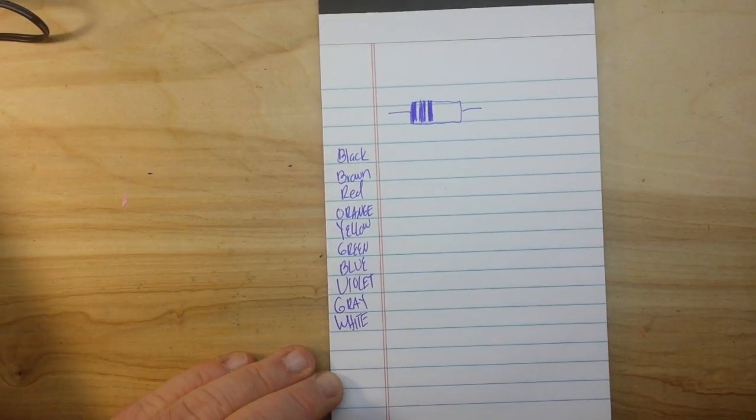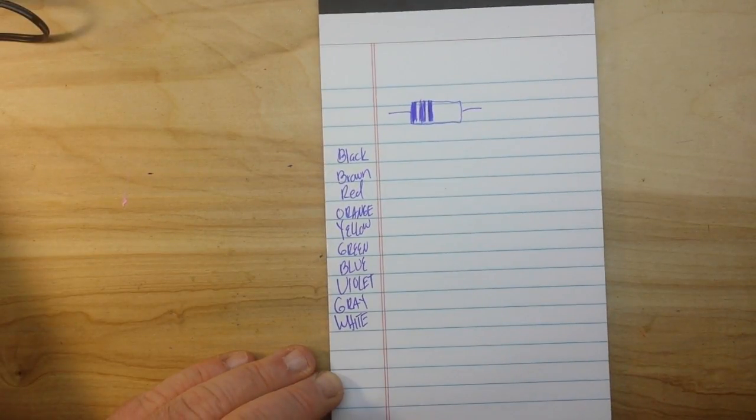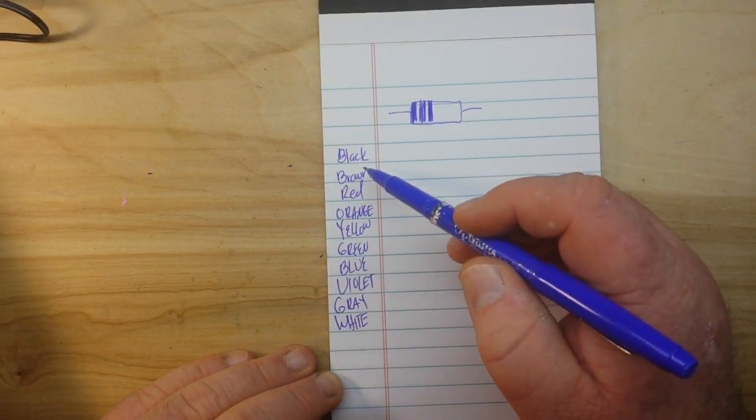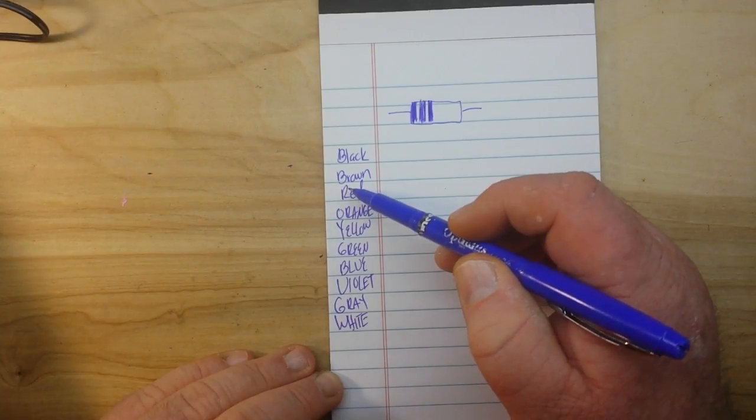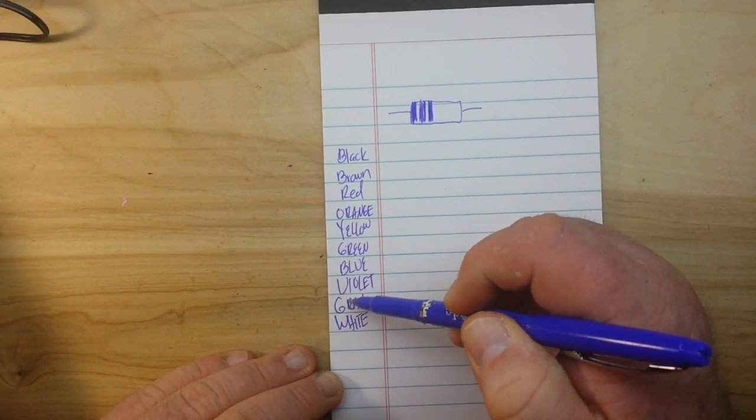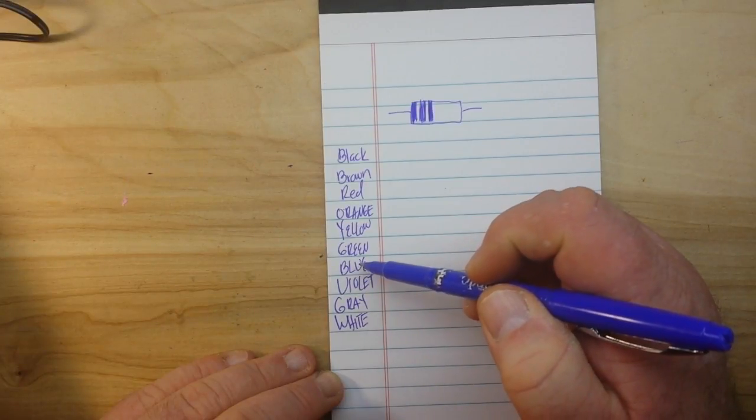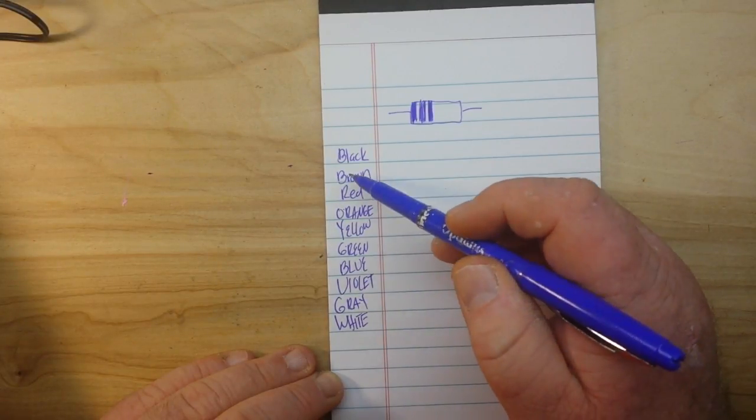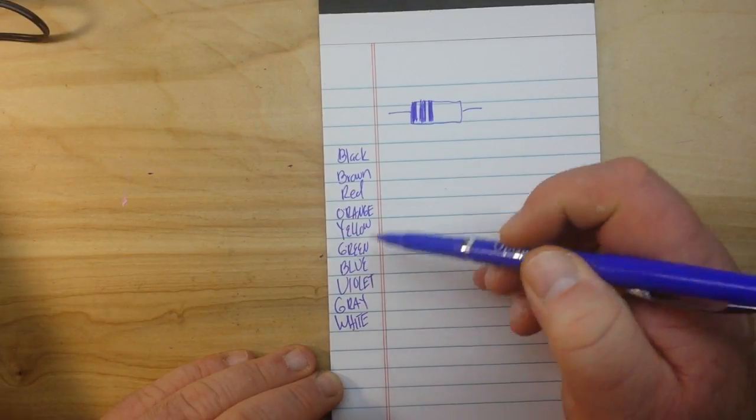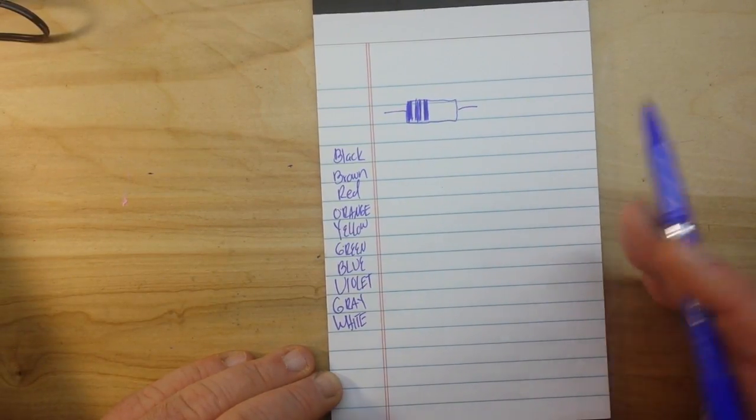But if you're at least somewhere near my age, you might have been taught the colors of the rainbow. Red, orange, yellow, green, blue, indigo, violet. ROY G BIV. There's no indigo, but you know, you get the idea. It makes it easier to remember.